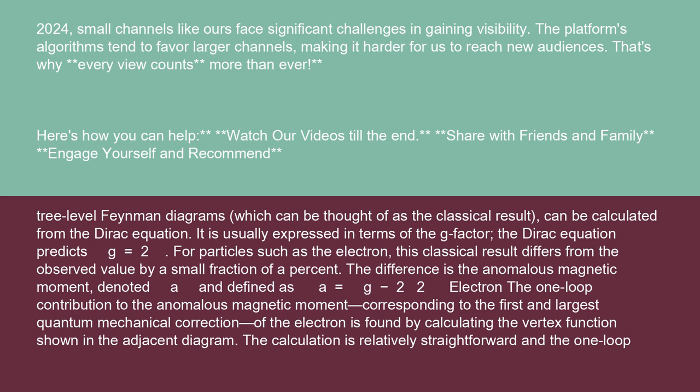For particles such as the electron, this classical result differs from the observed value by a small fraction of a percent. The difference is the anomalous magnetic moment, denoted a and defined as a equals g minus 2 over 2.